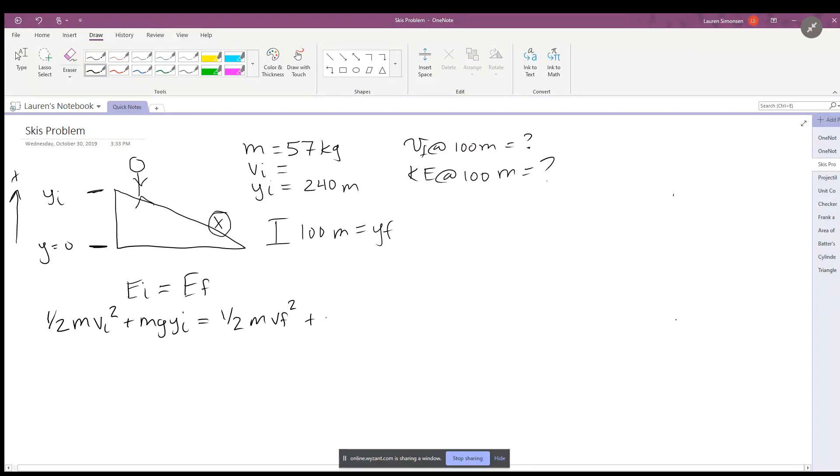For this problem we want to find velocity final, so we're going to be solving for this quantity. But we can simplify this expression a little bit. While it's not explicitly stated in the problem, I am going to assume that the skier is starting from rest up here, so v initial is going to be zero meters per second, which means this whole expression can be zero.